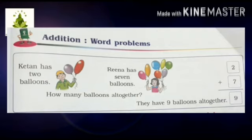They have 9 balloons all together. In the question they asked 'all together' — that means we are adding Ketan's 2 balloons with Rina's 7 balloons to find out how many there are all together. So you need to add 2 plus 7, and you will get the total answer: 2 plus 7 is equal to 9.